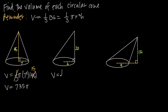So in this case, volume is equal to one-third π times r squared — or 6 squared — times the height, which is 20. When we simplify, 6 times 6 is 36, and 36 divided by 3 gives us 12, and 12 times 20 gives us 240. So we end up with 240π as the volume of this cone.